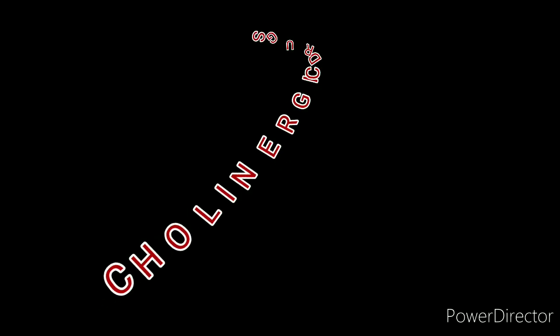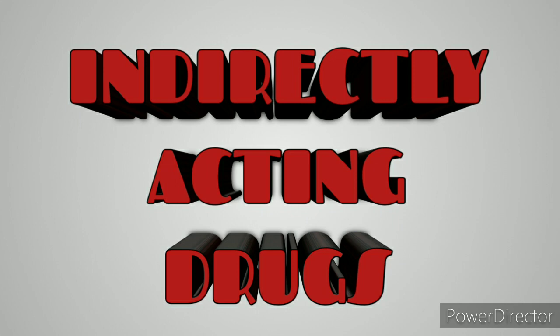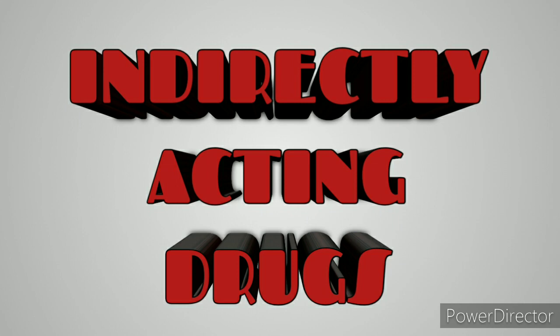Anticholinesterases are mainly classified into two groups. The first one is reversible inhibitors — these are generally used clinically in patients and are safer drugs. The second one is irreversible inhibitors — these will inhibit the acetylcholinesterase enzyme irreversibly and are mainly poisonous.